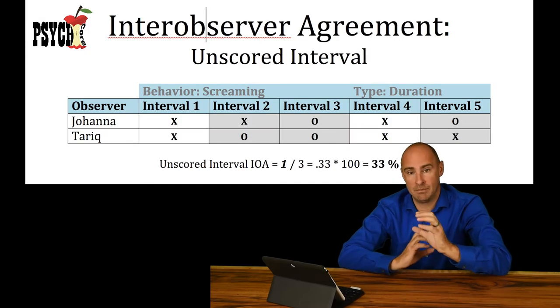We're going to count only the intervals that have non-occurrence, and then count the numbers of those intervals that the two observers agreed. So if both people didn't see Bob pick his nose during that interval, then there's an agreement.